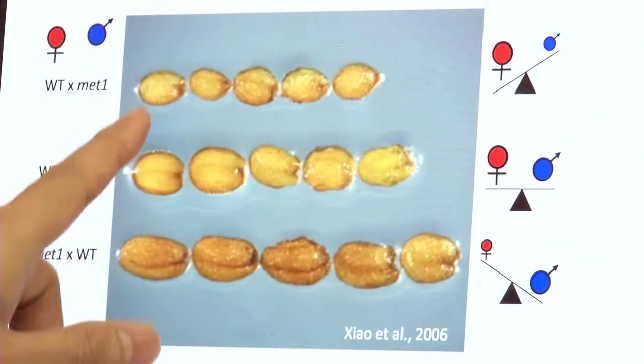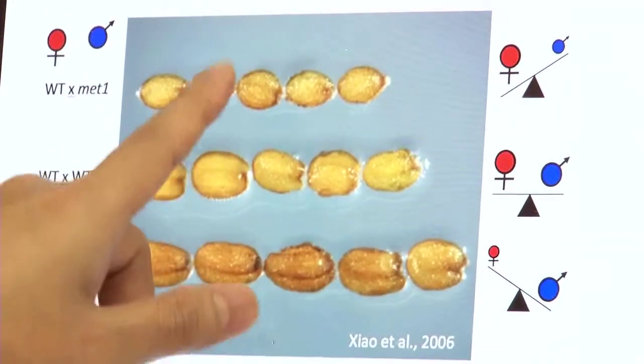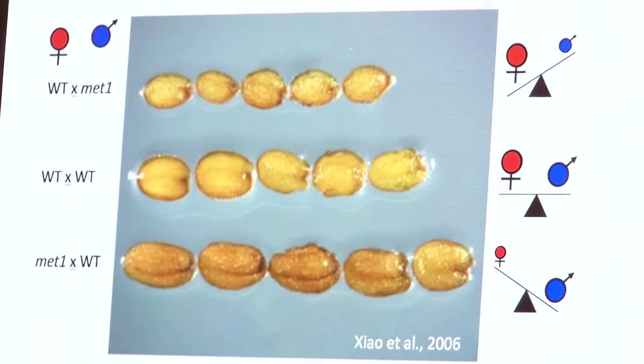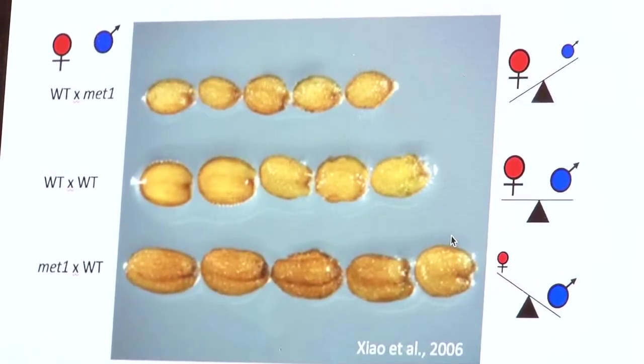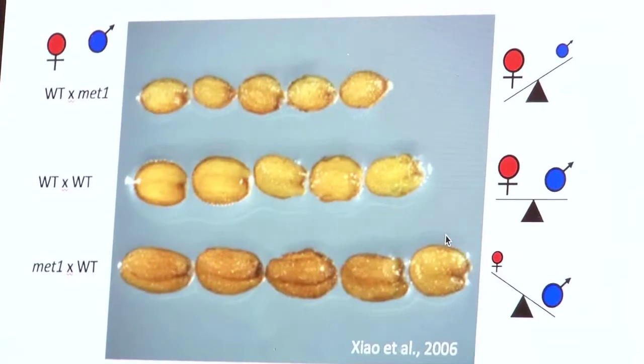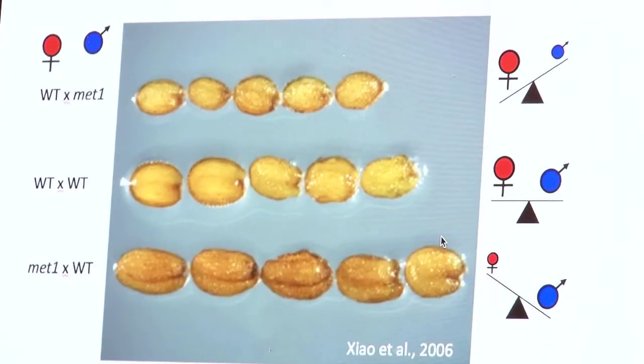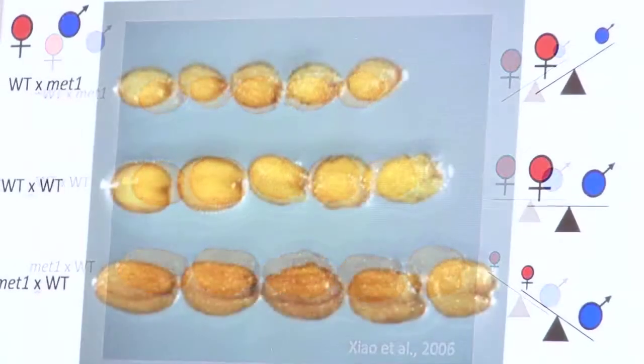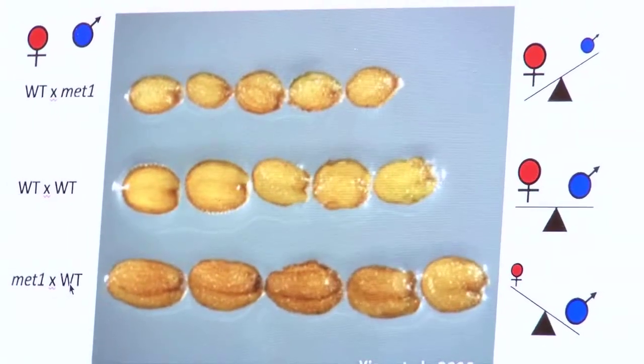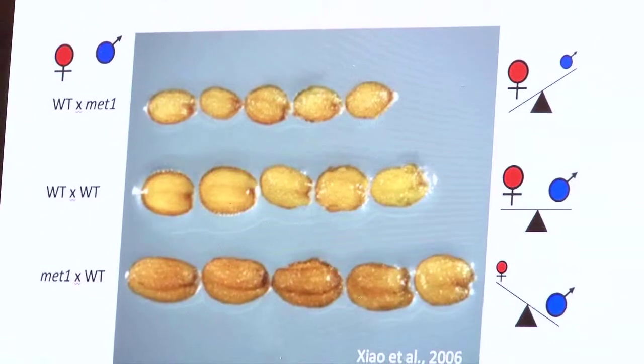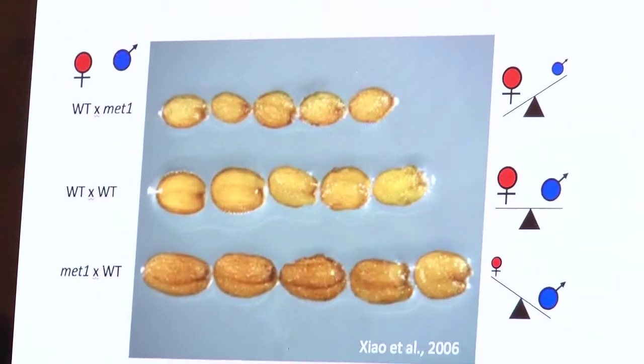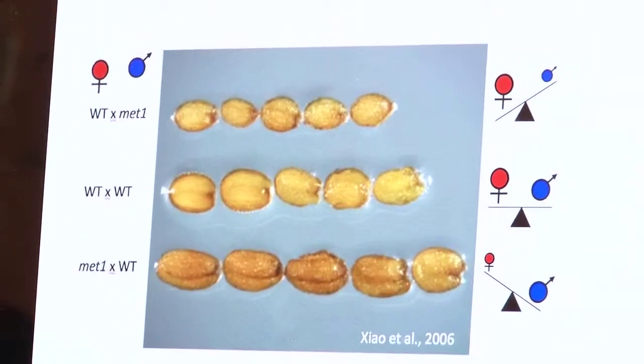If we know which genes are responsible for making these bigger seeds, we can use them as markers for breeding programs that look for higher yield crops, or breed for crops that have enhanced nutritional value that will be beneficial to human health.